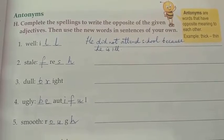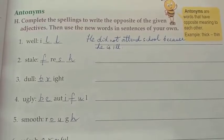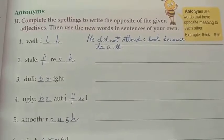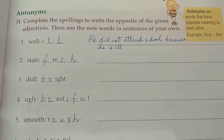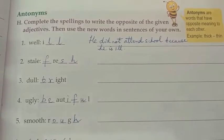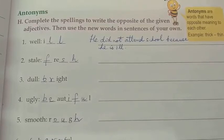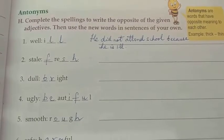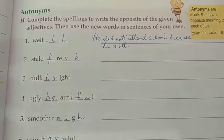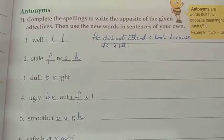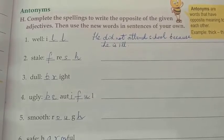Antonyms are words that have opposite meaning to each other. Example: thick, thin. In simple words, antonyms ka matlab hai opposite words. So you have to complete the opposite words — the negative opposite words in the sentence. And when you have those opposite words, then you can make a sentence using them.